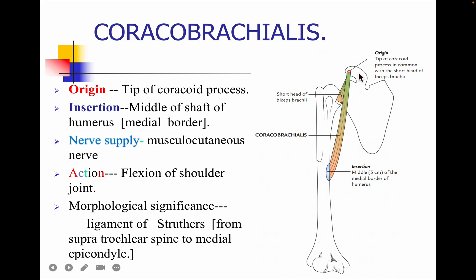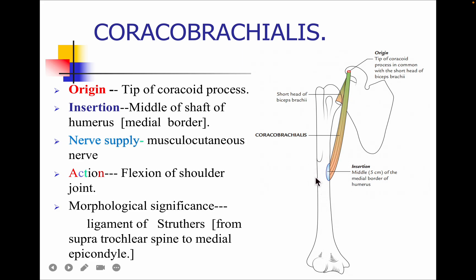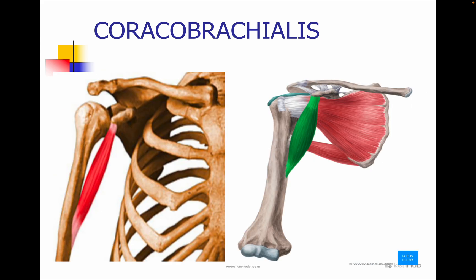The first muscle is the coracobrachialis. The origin is from the tip of the coracoid process and the insertion is in the middle one-third of the shaft of the humerus. The nerve supply is the musculocutaneous nerve. The action is flexion of the shoulder joint. Regarding morphological significance, there is a term known as the ligament of Struthers, which arises from the supratrochlear spine to the medial epicondyle.